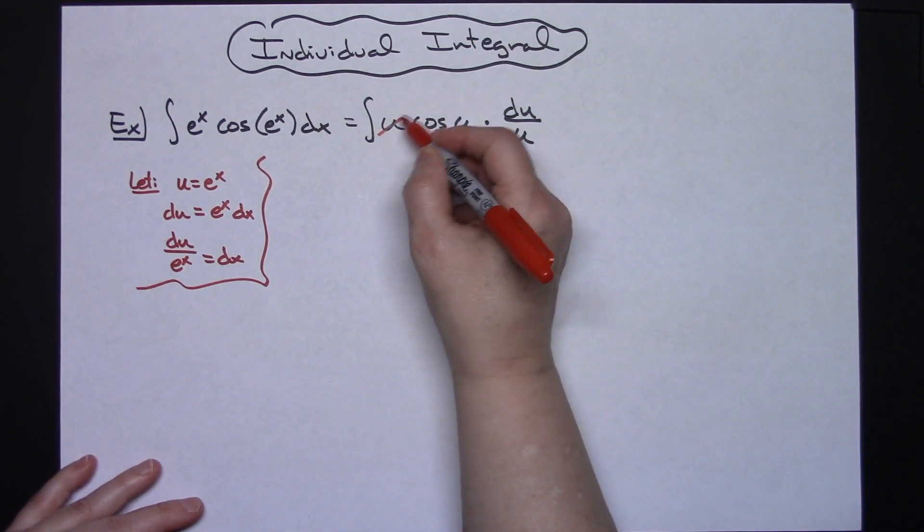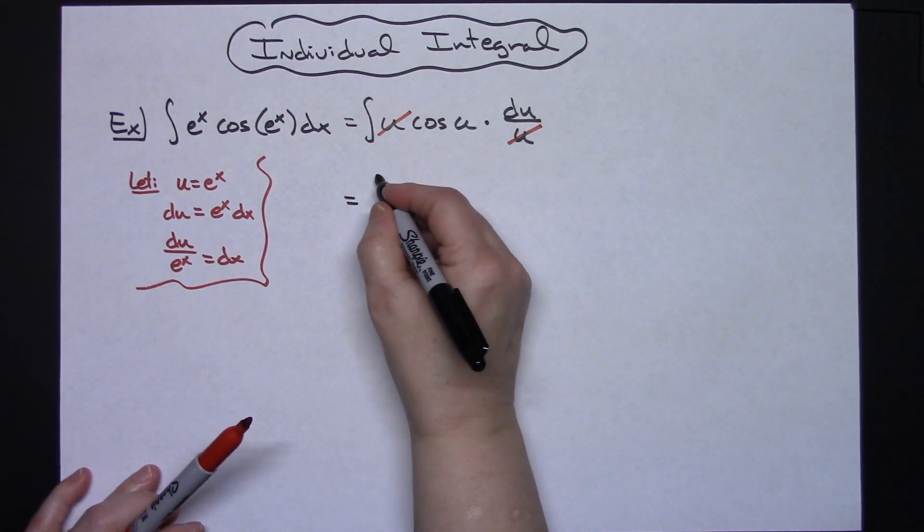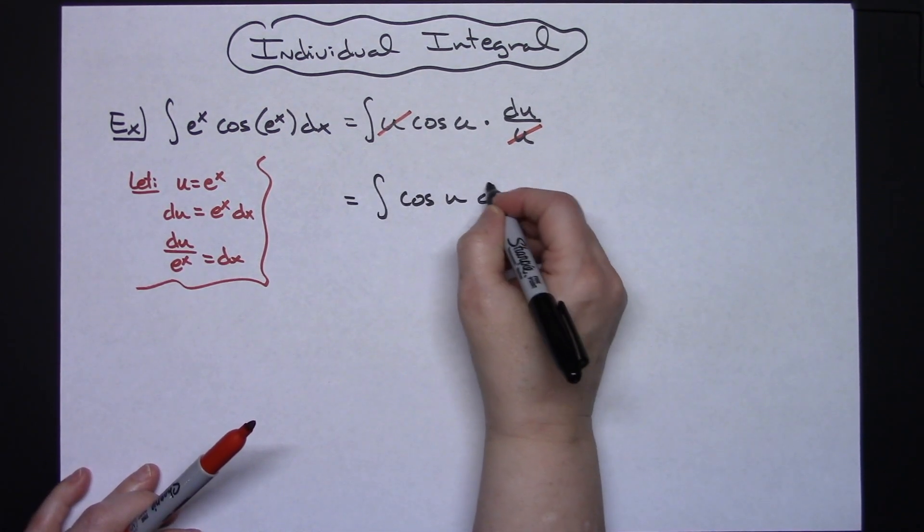Now I'm going to then be able to get rid of that u and that u, so that'll leave me with the integral of cosine u du.